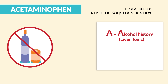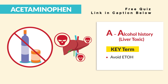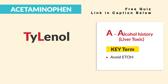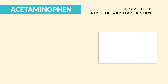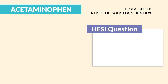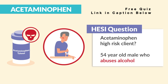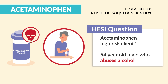A is for alcohol history — basically liver toxic. The key term is we avoid ETOH and alcoholics. So think: TL for Tylenol is TL for toxic liver. A common HESI question for acetaminophen is trying to determine a high-risk client — for example, the 54-year-old male who abuses alcohol.